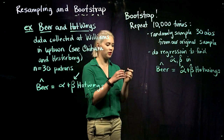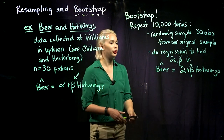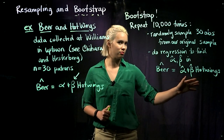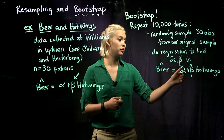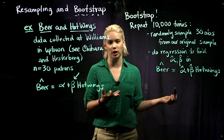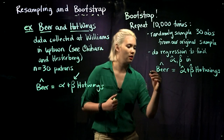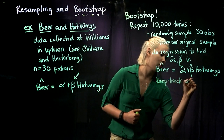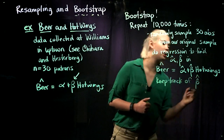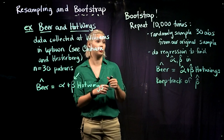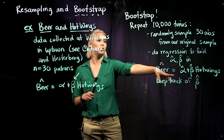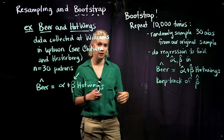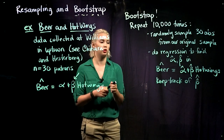We use those 30 observations in our resample to estimate the intercept and the slope in our regression equation. Then we're going to keep track of beta hat. We keep track of the beta hats because we're going to put them into our bootstrap distribution. All of these beta hats that we calculate from doing this repeatedly create our bootstrap distribution.